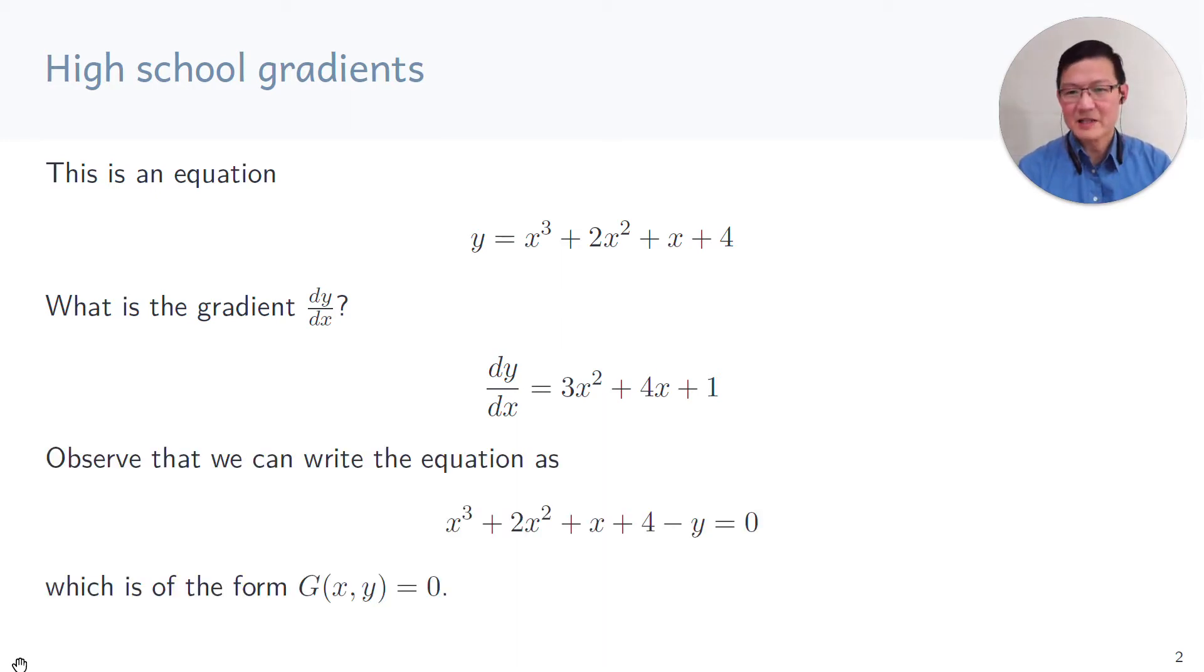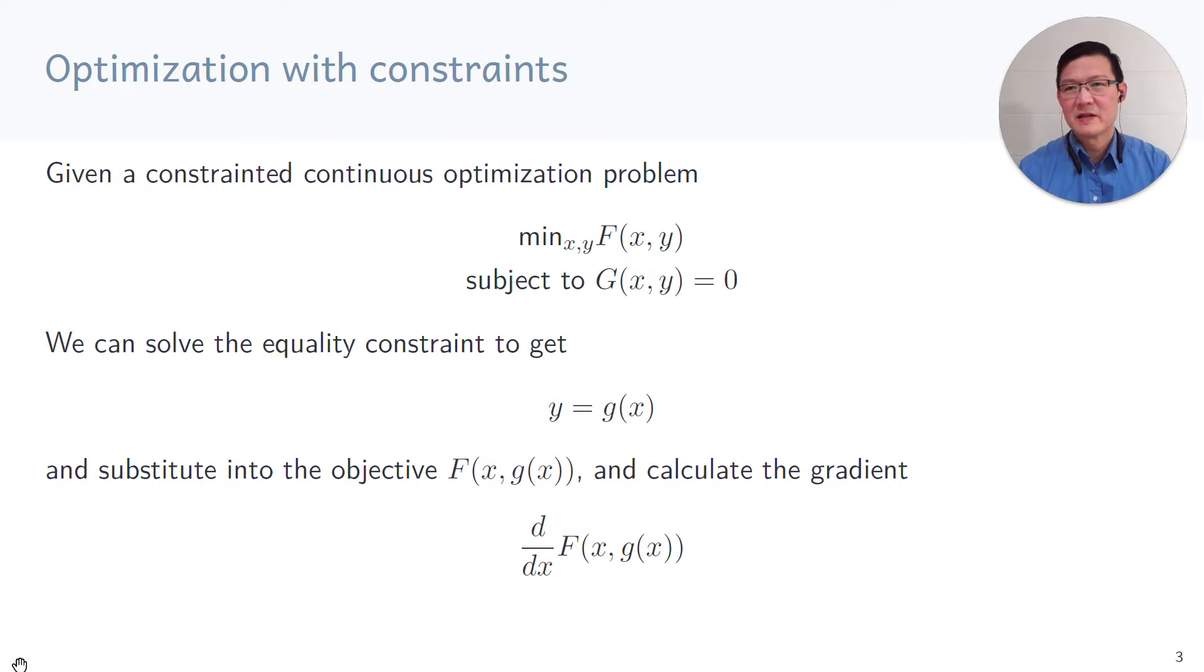Observe that we can write this equation in a homogeneous form by just moving y on the other side. In general, we want to solve problems as the following. We're given some function f in terms of x and y, which we want to minimize, subject to a constraint such as the form g we've seen before.